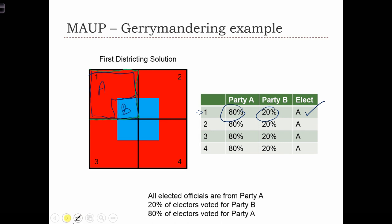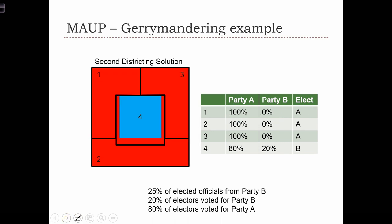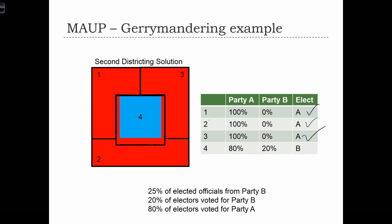Now, what about this kind of districting system? Here we still have four districts, but instead of splitting them by the four corners of the state, we've carved out a district in the center surrounding the capital city, and then made three rural districts surrounding that. In this case, each of districts 1, 2, and 3 vote 100% for party A and elect party A. But the population inside District 4 is 80% in favor of party B and 20% in favor of party A. As a result, party B would get a seat in Congress.